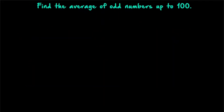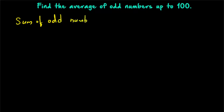Question number 3: find the average of odd numbers up to 100. So the sum of odd numbers up to n — that is what we have to first find out. We are going to derive a general formula.